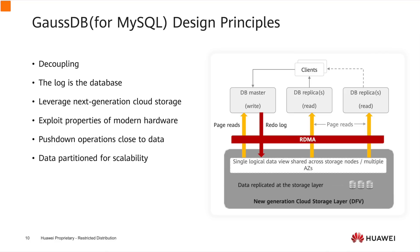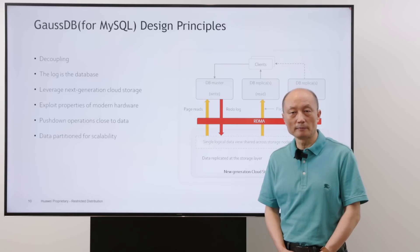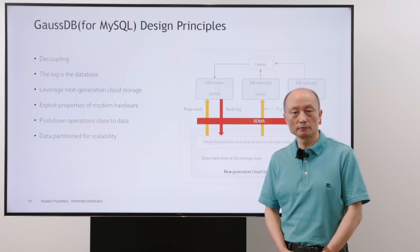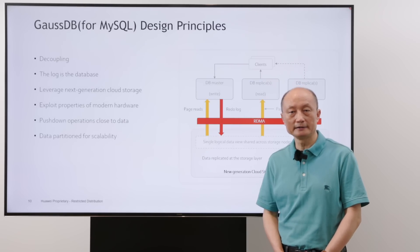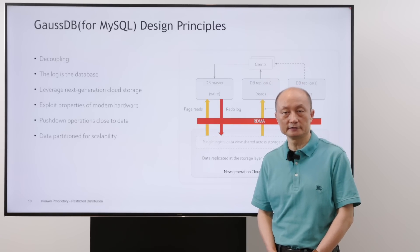We also exploit properties of modern hardware, for example RDMA or tiered storage. We also push down operations close to data, because of smart storage with computational power. We have data partitioned for scalability. Data is automatically partitioned into multiple storage nodes and supports up to 128 terabytes of data for each database.